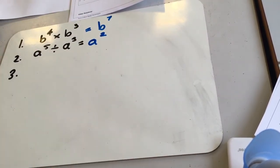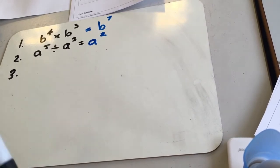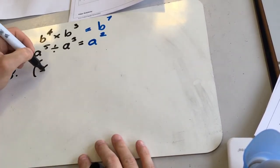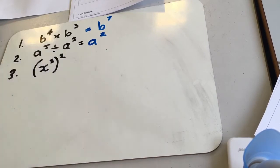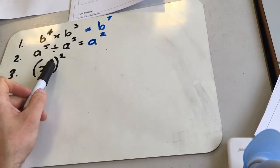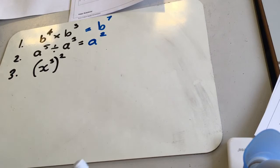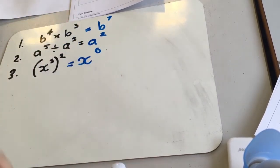All right, question 3, we've got x cubed all squared. So we're going to be multiplying these powers because of our indices rule, which gives us x to the power 6.